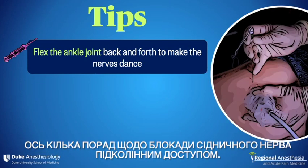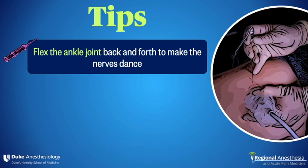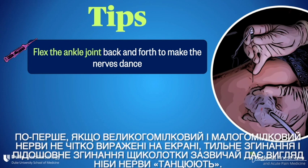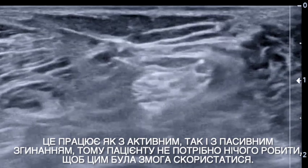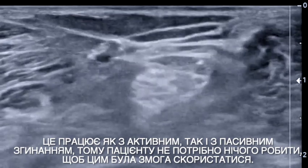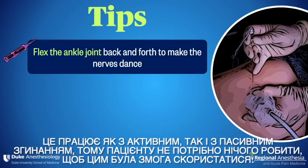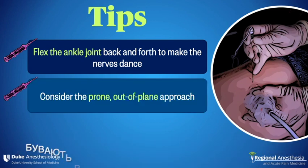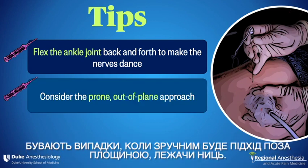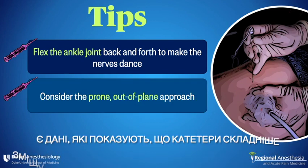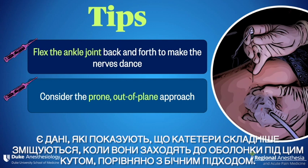Here are some tips for popliteal sciatic nerve block. First, if the tibial and peroneal nerves are not well defined on the screen, dorsiflexing and plantar flexing the ankle usually makes the nerves appear to dance. This works well with both active and passive flexion, so the patient doesn't have to be cooperative to take advantage of this. There are times when the prone out-of-plane approach is convenient; data show that catheters don't get displaced as easily when they approach the sheath from this angle compared to the lateral approach.